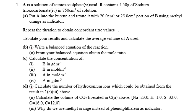Repeat the titration to obtain concordant titre values. Calculate your readings and calculate the average volume of A used. Question B, Roman figure 1: Write a balanced equation of the reaction. Roman figure 2: From your balanced equation, obtain the mole ratio. C: Calculate the concentration — Roman figure 1: B in grams per dm³; Roman figure 2: B in moles per dm³; Roman figure 3: A in moles per dm³; and Roman figure 4: A in grams per dm³.